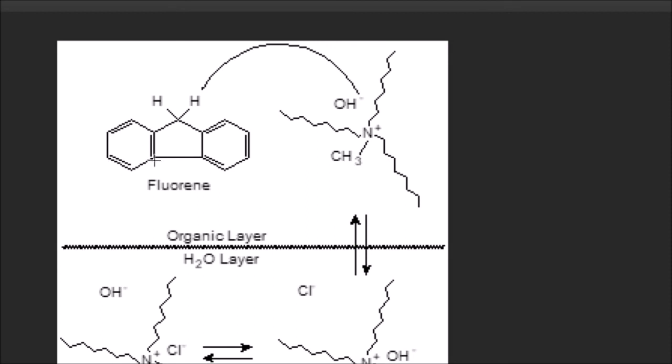As we can see here, we have the fluorene. For this reaction to happen, we need to take hydrogen from the fluorene, and of course only base can do that. That's the purpose of the OH- or our base. The problem is that our base is ionic - it's sodium hydroxide and it prefers to be soluble in the aqueous layer.